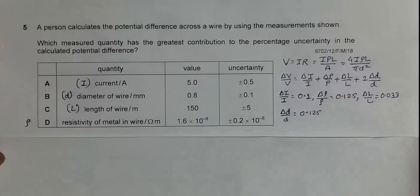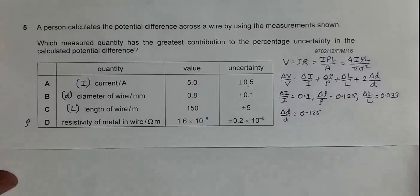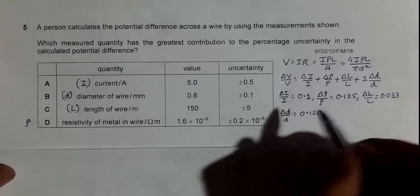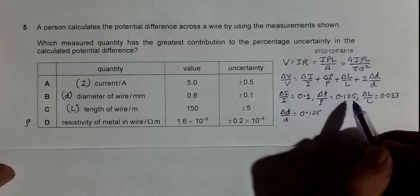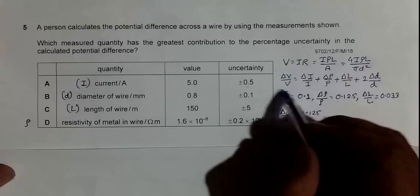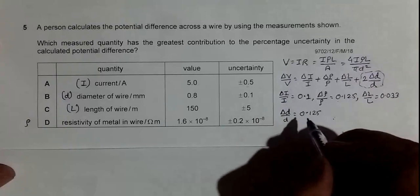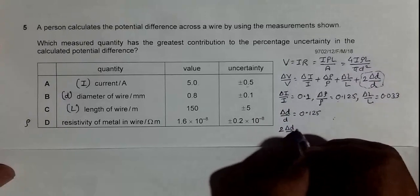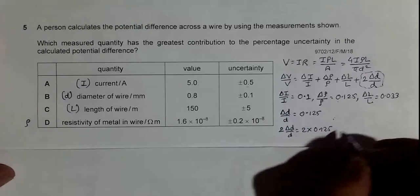So converting this thing into percentage, now what remains is Δρ by ρ equal to 0.125 and ΔD by D equal to 0.125. But in ΔV by V, the contribution for ΔD by D is twice, so the total contribution for ΔD by D is equal to 2 into 0.125, and that's equal to 0.25.